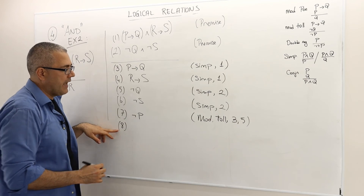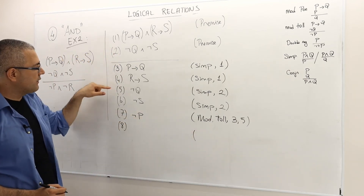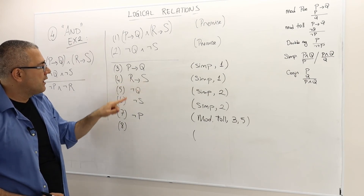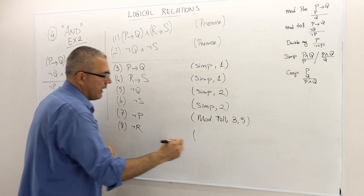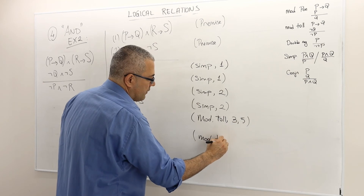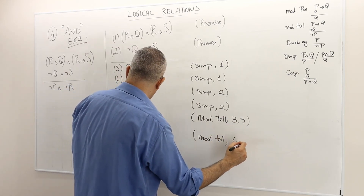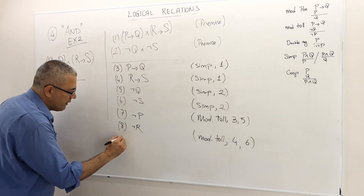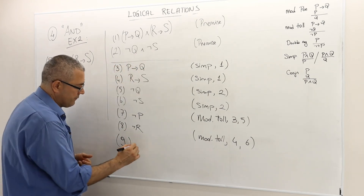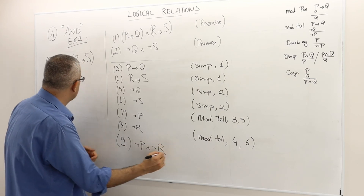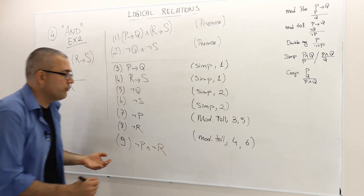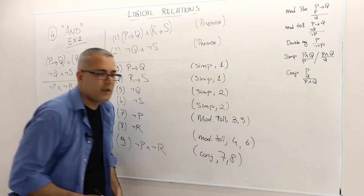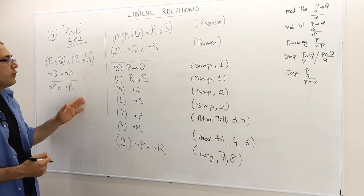Then in line 8, I can again use modus tollens, because I have not S which is true and R implies S is true. So by modus tollens of the arguments in lines 4 and 6, not R must be true. So once I have lines 7 and 8, by using the conjunction rule, not P and not R — which is the conclusion I was trying to prove — is also true. This is the conjunction of arguments in lines 7 and 8. So this is how I prove that this argument is valid.